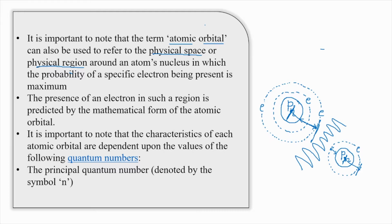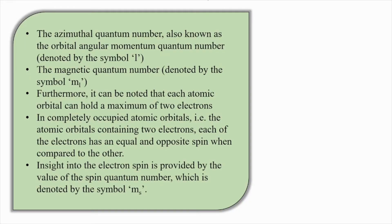The principal quantum number is denoted by n. There are various other quantum numbers as well — let us try learning them. The principal quantum number is given to us by n.